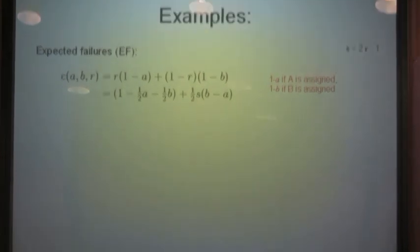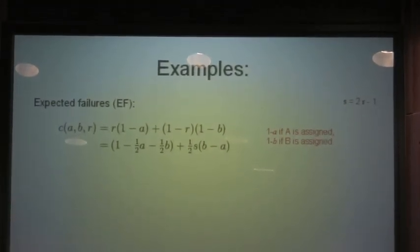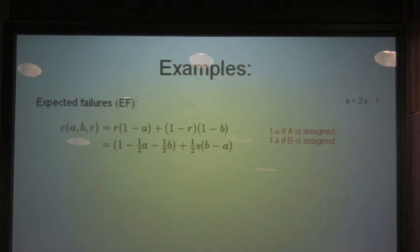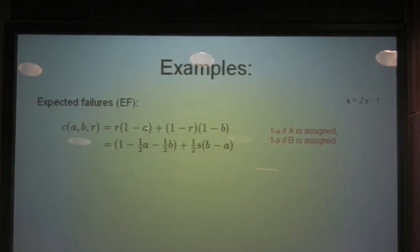So here are examples of cost functions that satisfy those criteria. And these are standard ones that are used in clinical trials, or proposed for adaptive clinical trials. Expected failures, which is called EF. So A is the cure rate, and so if with probability R we choose A, then R times 1 minus A are the number of failures of A due to A, and 1 minus R times 1 minus B is the number of failures due to B. So rewriting this in terms of this S, which is just this reparameterization of R, you find this, and you can see this is an even part, this only depends on A plus B, and this is an odd part, it depends on A minus B, or B minus A.